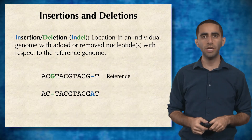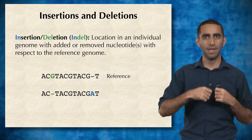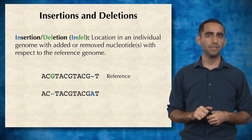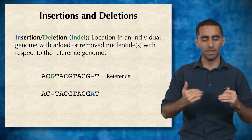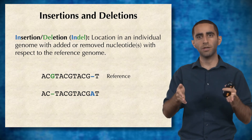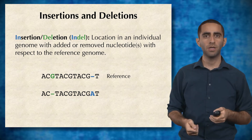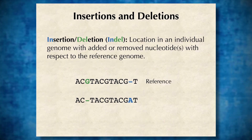In addition to these three types of mutations, we also have insertions and deletions. An insertion is when an individual has an extra letter with respect to the reference genome — for example, this blue A is in the individual but doesn't appear in the reference, meaning it was an insertion. A deletion is when a nucleotide present in the reference genome does not appear in the individual — the green G in the reference genome does not appear in the individual, so this is a deletion with respect to the reference.